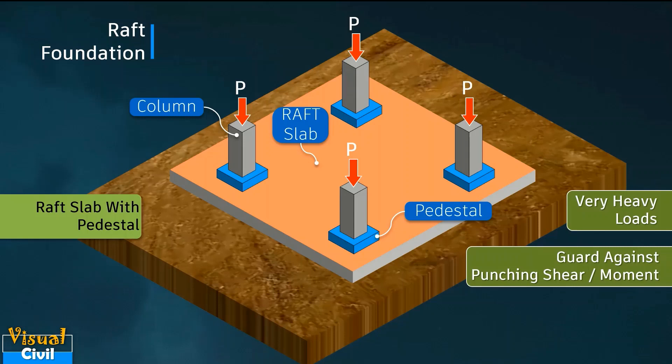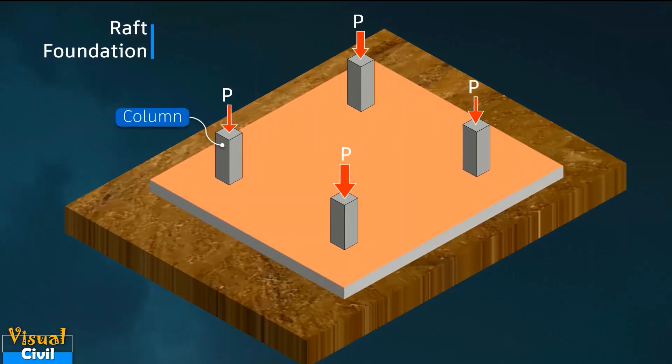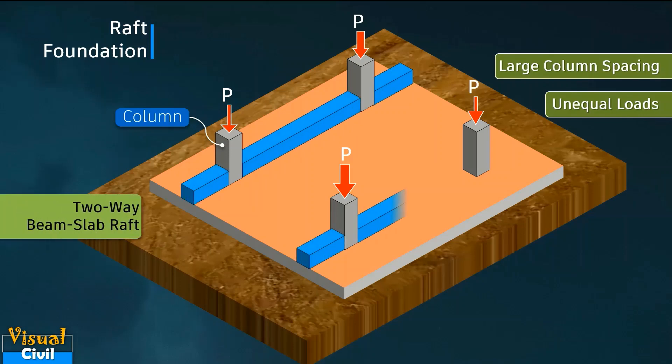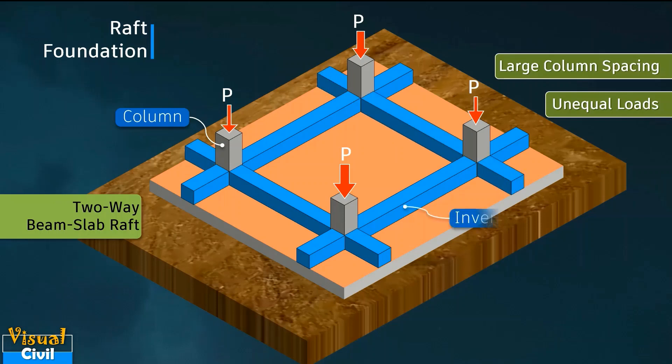When the column spacing is large and carries unequal loads, it would be more economical if a two-way beam and slab raft is used. This type of raft is particularly suitable when underlying soil is too compressible.